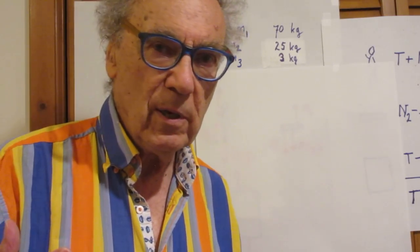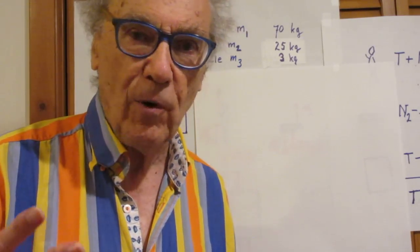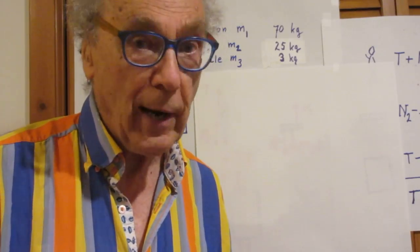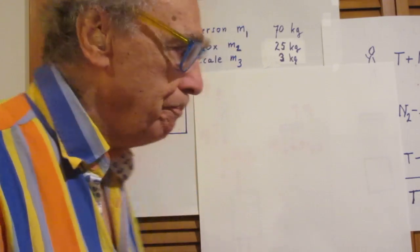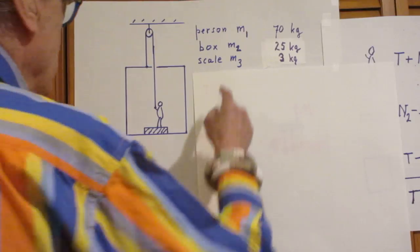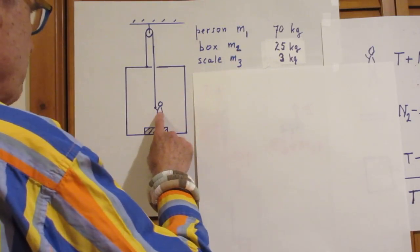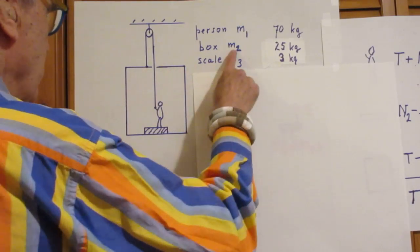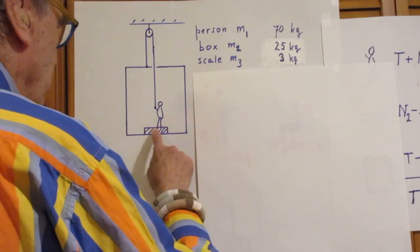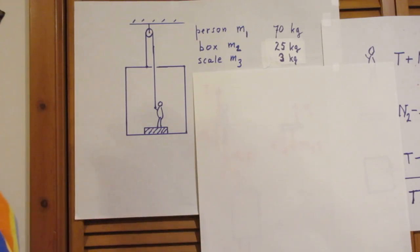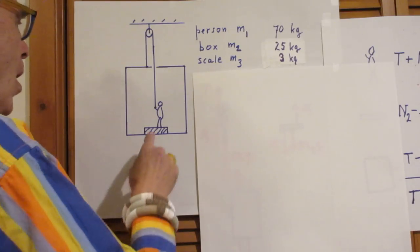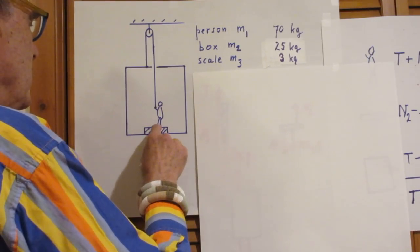In other words, it reads the mass of the object. Many scales are in kilograms. The mass of the person is m1, the mass of the box is m2, and the mass of the scale is m3. What is the reading of the scale?